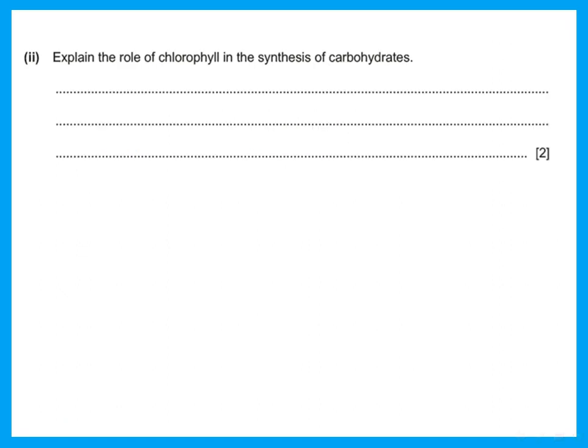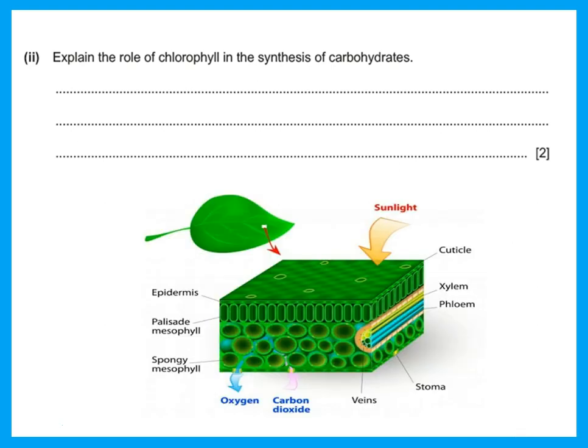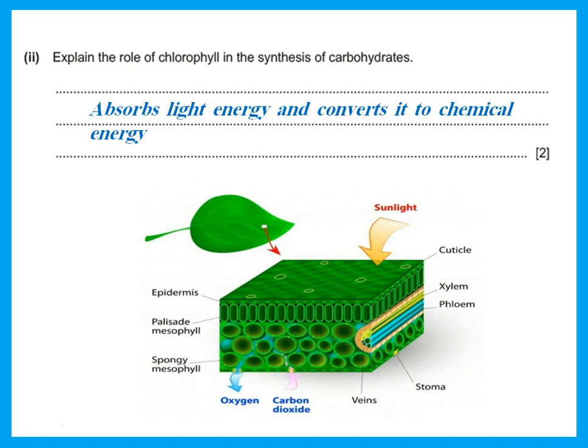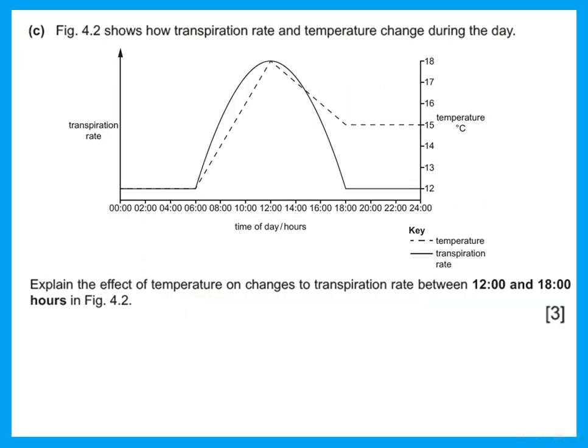Explain the role of chlorophyll in the synthesis of carbohydrates. Chlorophyll is the green pigment found inside chloroplasts in the cells of the leaf. The function of chlorophyll is to absorb light energy and convert it to chemical energy, which is used to make glucose and oxygen.